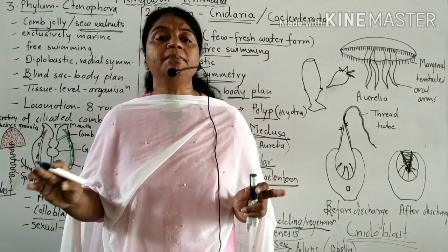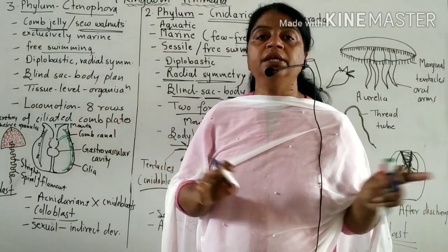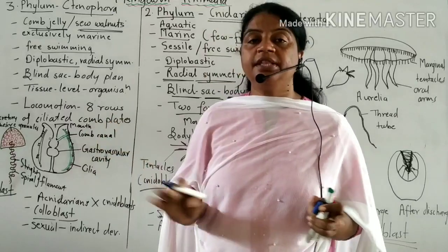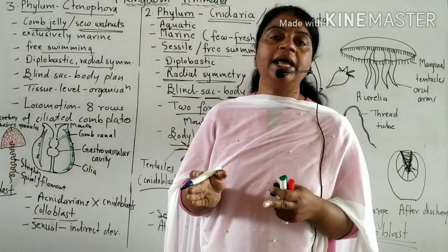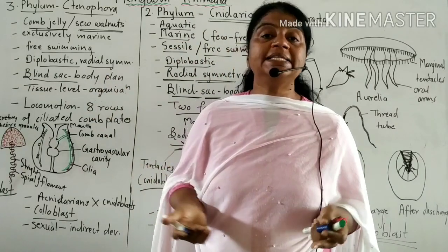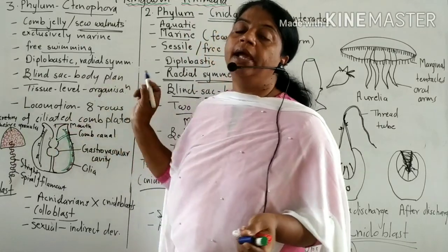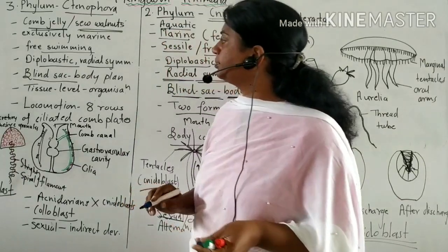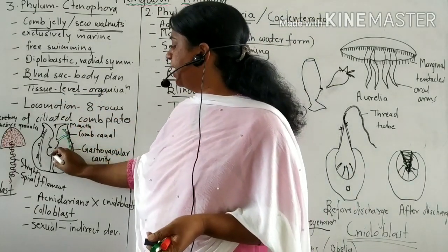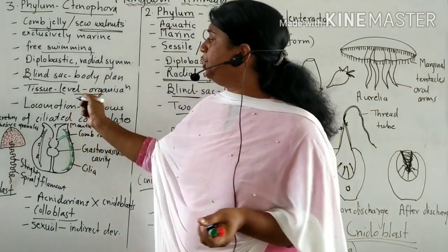Ctenophores are exclusively marine — none are found in freshwater. They are free swimming. They are diploblastic, with the body originating from two layers: ectoderm and endoderm. They show radial symmetry. Their body plan is a blind sac, like Hydra — one mouth through which food enters and undigested food exits. They show tissue level of organization, having structures such as pharynx, stomach, and comb jelly cilia.